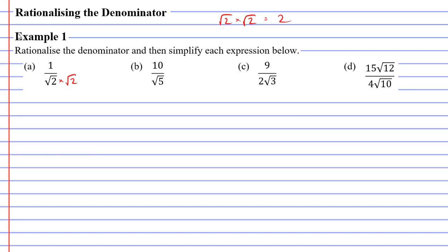Now, you're allowed to do this as long as you multiply the numerator by the same thing — you need to multiply it by the square root of two as well. So, one times the square root of two will give us the square root of two, and the square root of two times the square root of two equals two. So, our denominator is now a nice whole number of two. We've been able to rationalize the denominator.